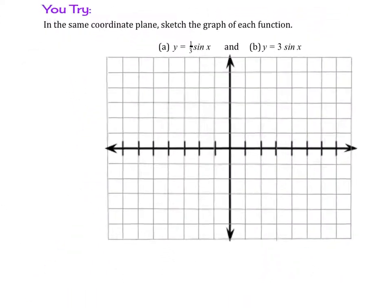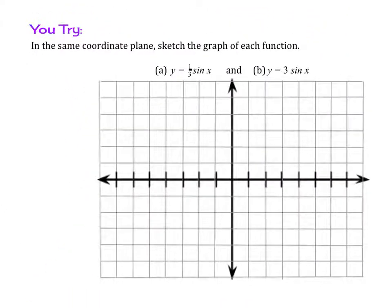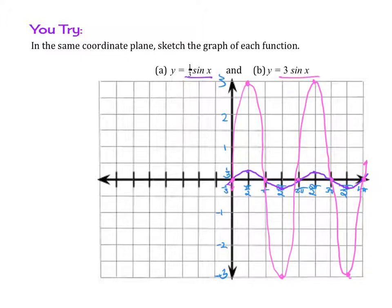So try this example. Graph sine, both 1/3 sine of x and y equals 3 sine x on the same plane. Okay, so if you tried it out, you would have gotten these two graphs. And so you can really tell that this is a vertical shrink. It's a lot smaller versus this, which is very tall.